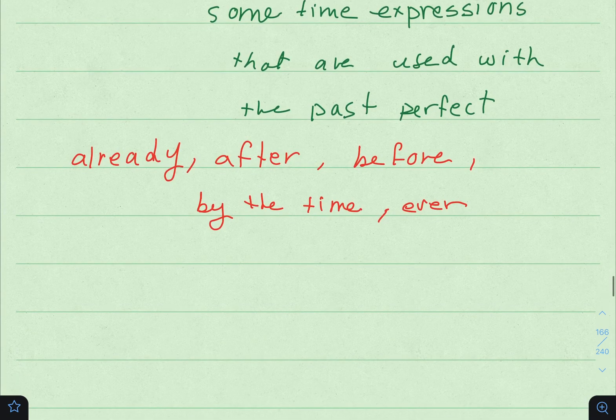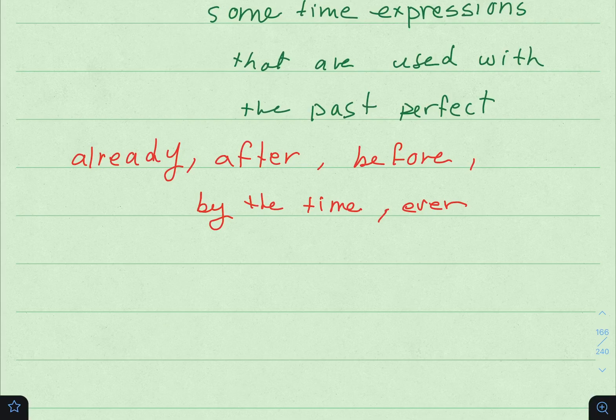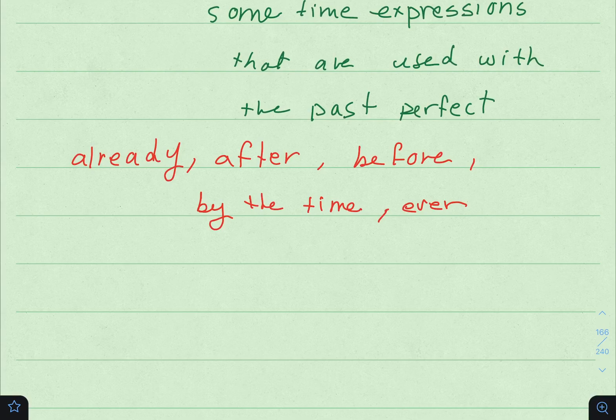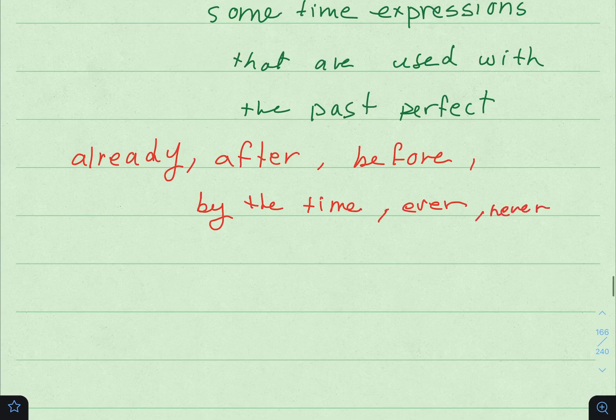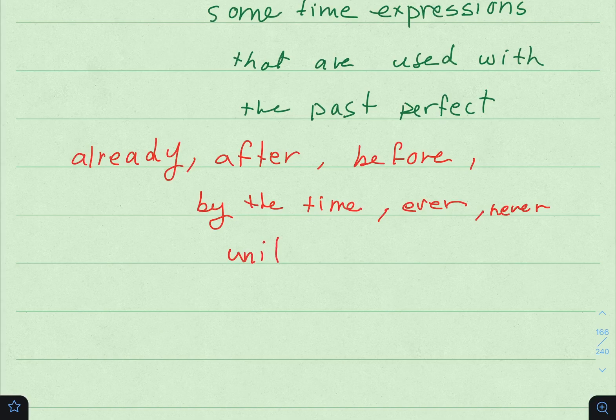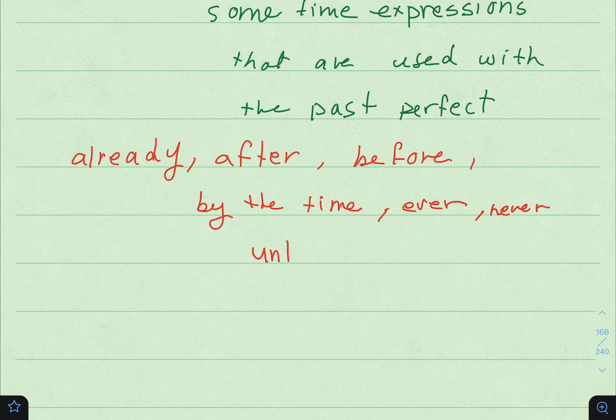We use some time expressions with the Past Perfect. بعض الكلمات أو time expressions اللي نستخدمها مع الماضي التام are: already, after, before, by the time, ever, also never, and until. Let me explain this one more time to help you understand better.